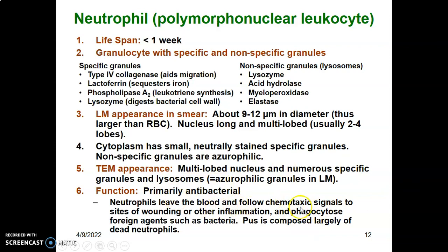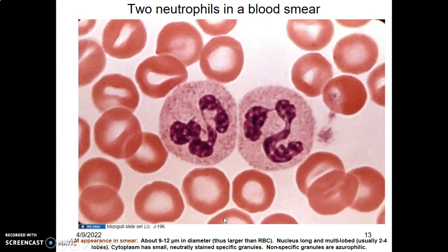The function of neutrophils is antibacterial. They are usually the first cell called upon for defense in acute inflammation. They leave the blood, follow chemotactic signals to the site of a wound, and phagocytose the foreign agent such as bacteria. Pus is composed largely of dead neutrophils. The neutrophil is larger than red blood cells, has a multi-lobulated nucleus, and cytoplasm with both specific and non-specific granules.